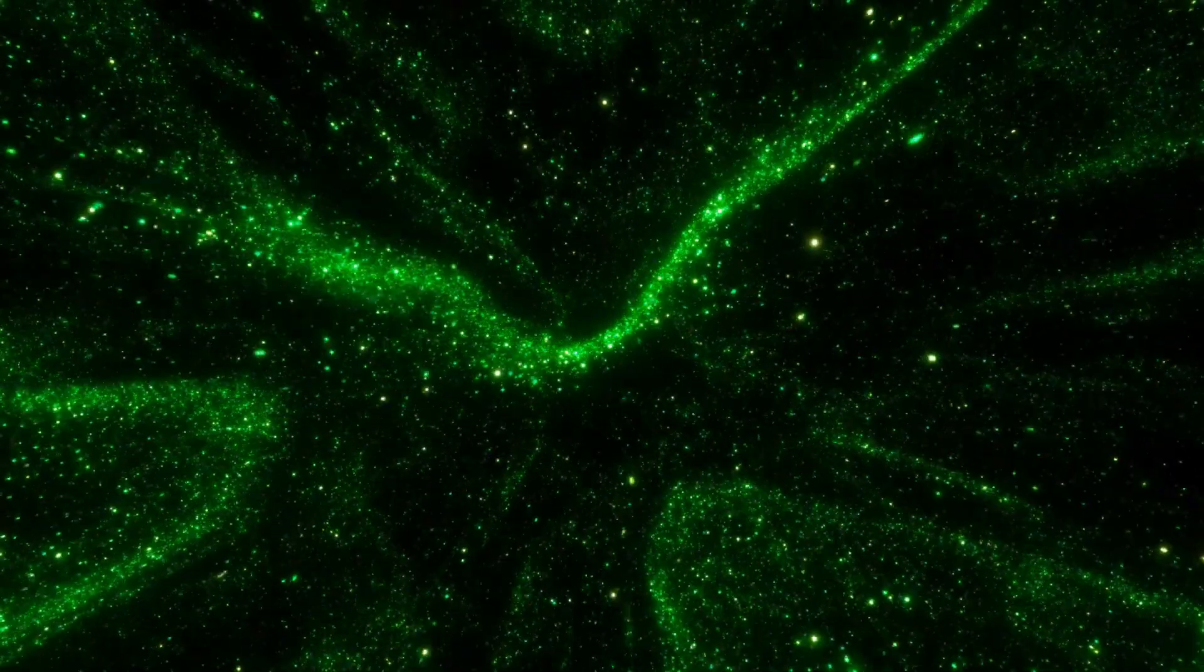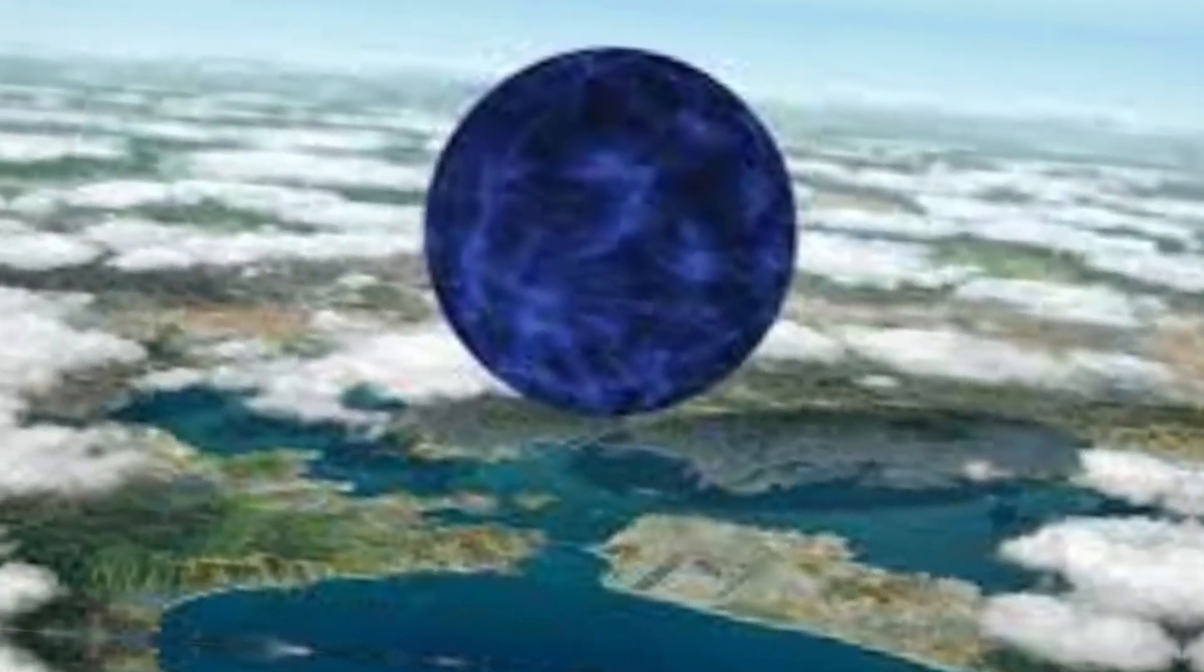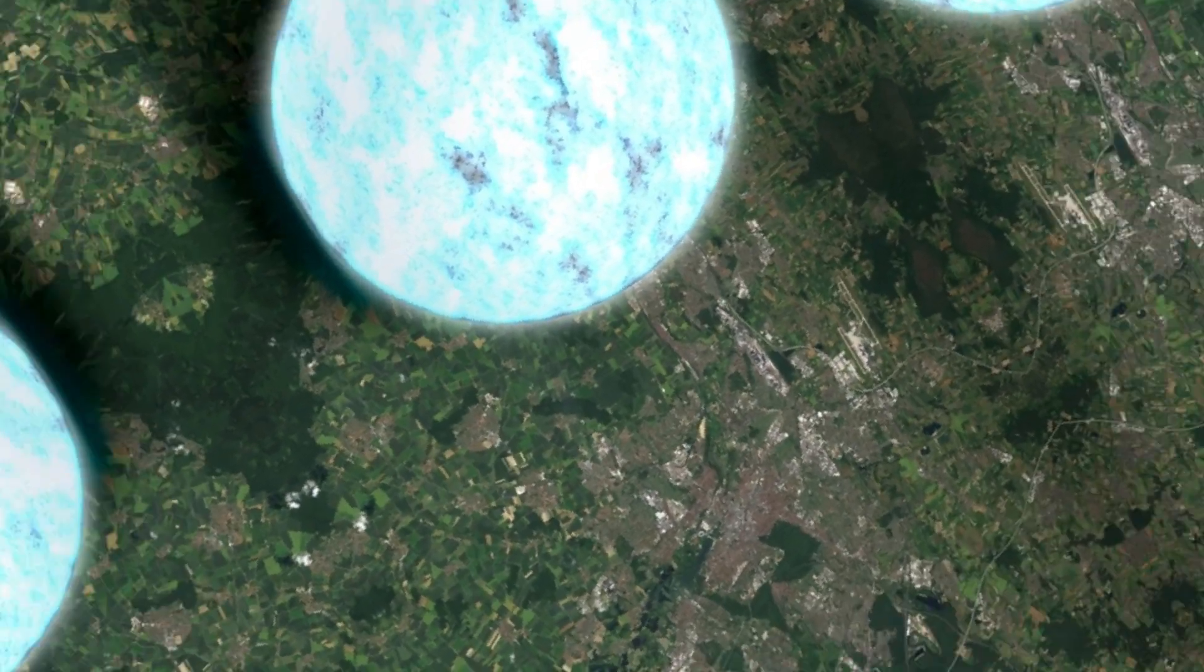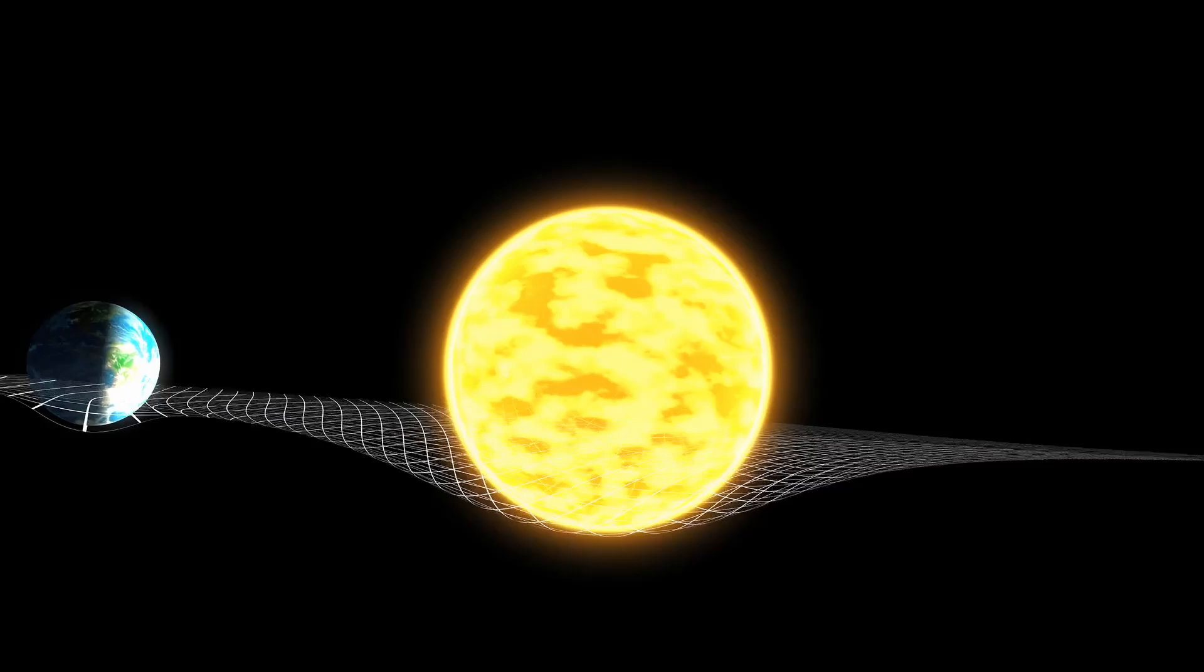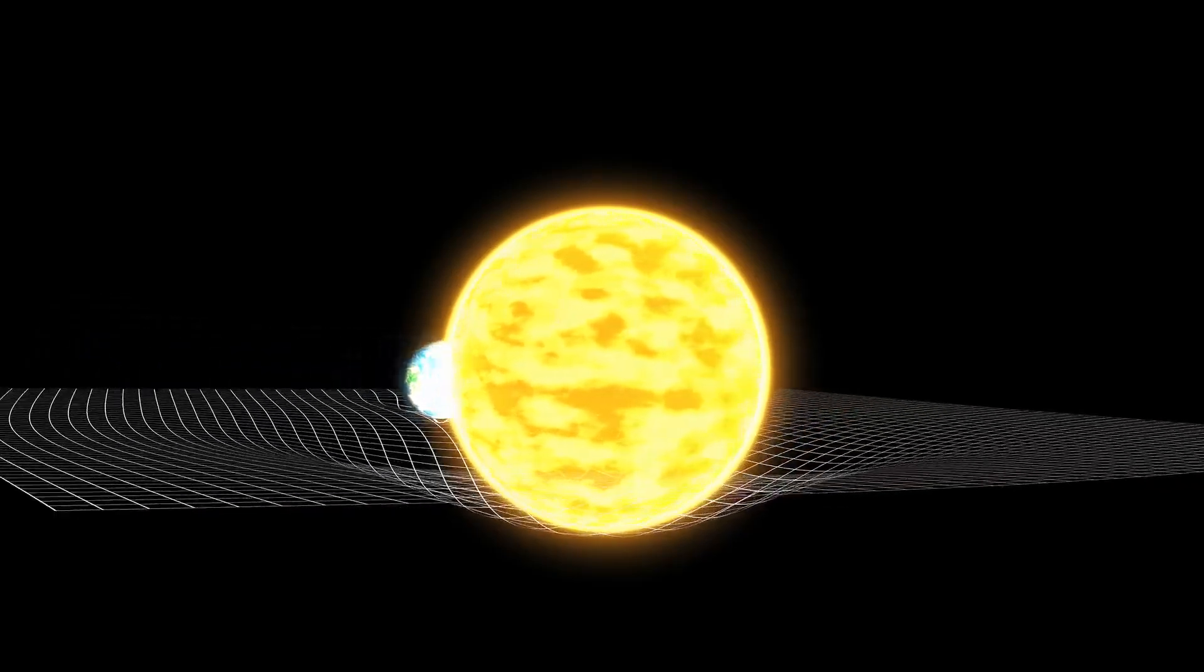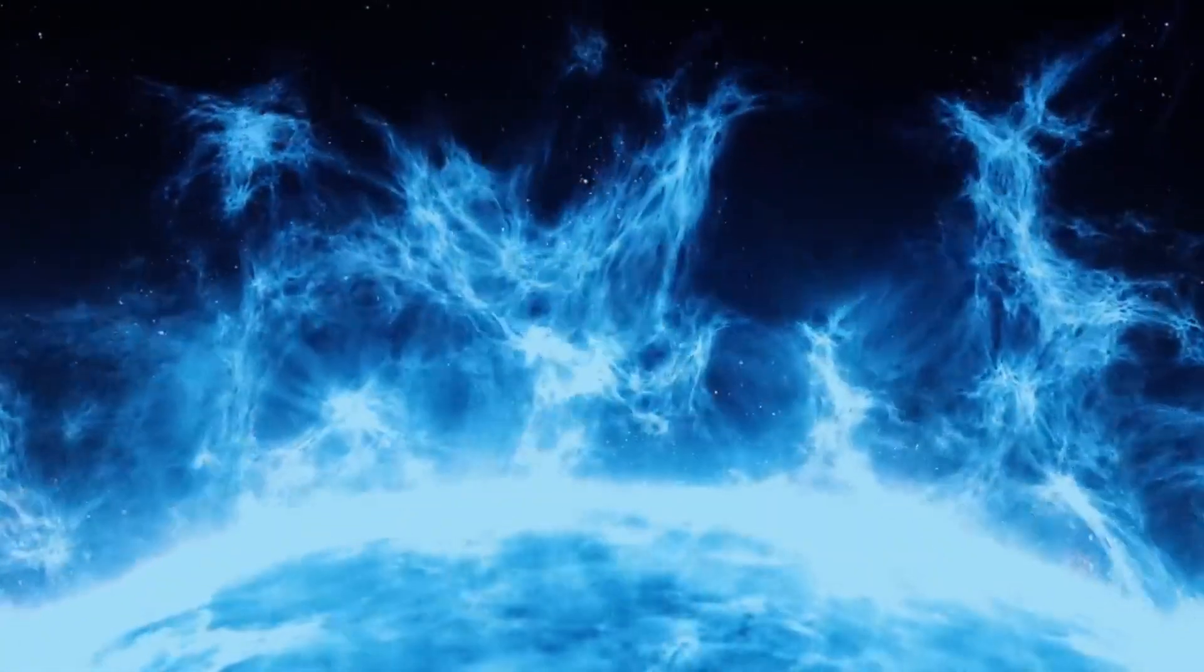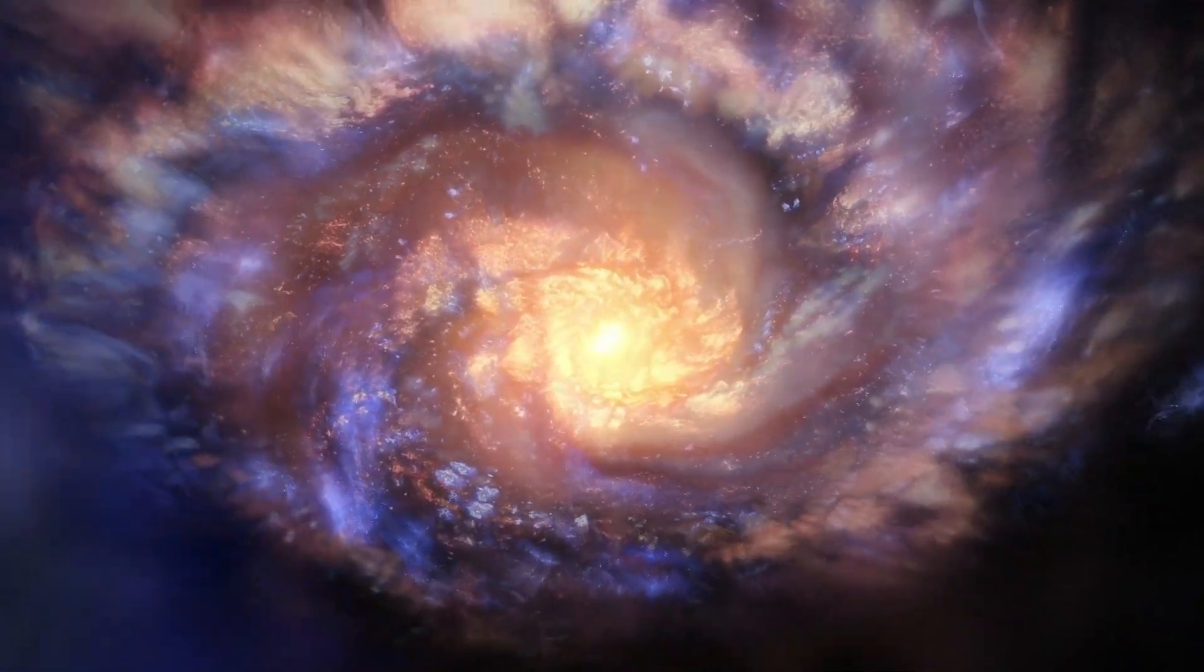Imagine this: neutron stars, though smaller than Earth, pack a punch like no other. Their mass is mind-blowingly immense, and their gravitational pull—well, let's just say if you dropped something just a meter above their surface, it'd shoot down at breakneck speed.